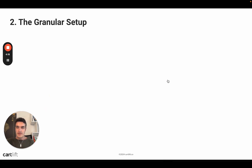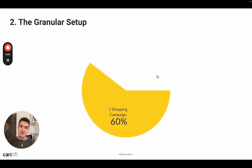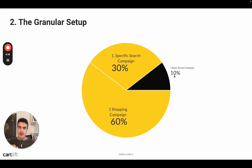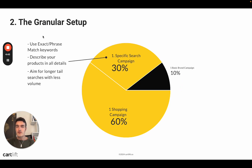Now let's move to the second setup: the granular setup. Granular is still relative because we still talk about a very basic, simple setup. Here you have a very large shopping campaign — about 60% of budget — plus still the basic brand campaign, but now you also add a specific search campaign. This specific search campaign has a very specific purpose: you want to use exact and phrase match keywords that describe your products in detail, and you want to aim for longer-tail searches with less volume.